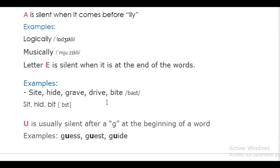When the E is at the end of the word, we don't pronounce it. But the vowel in the middle of that word becomes longer. Here we have other words with almost the same spelling but without an E at the end: sit, head, bit.